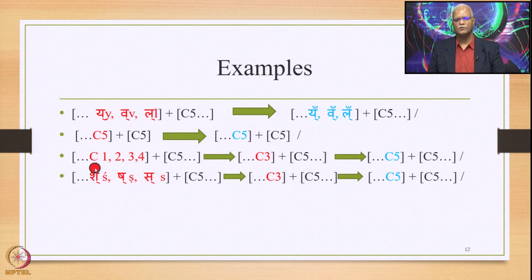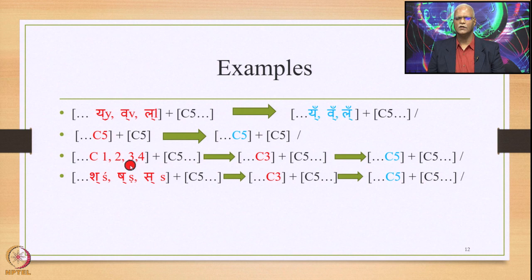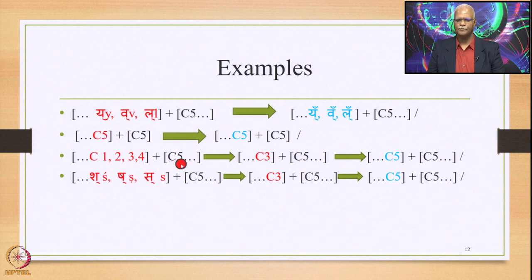Then we go to class consonants columns 1, 2, 3, and 4 — Ka, Kha, Gha, Chha, Jha, Tathadha, Dha, Pha, Bha — when they are followed by column 5 of the class consonants, multiple operations happen. These C1234 first get substituted by C3 by application of Jhalam Jashonte, and then this C3 gets substituted by C5, and the output generated is C5 plus C5.